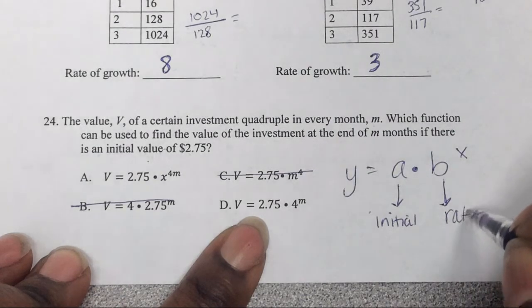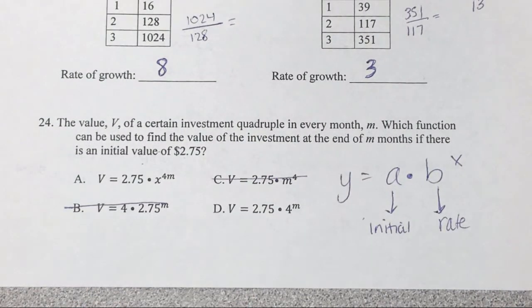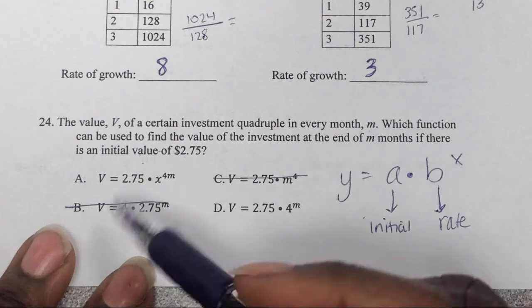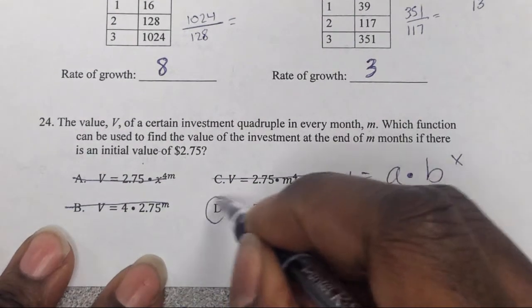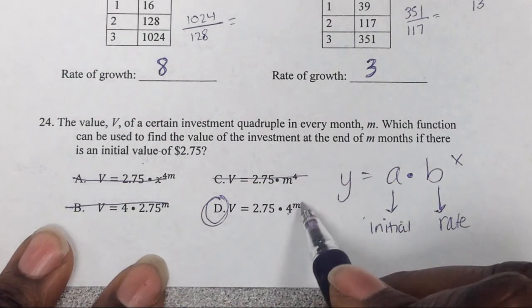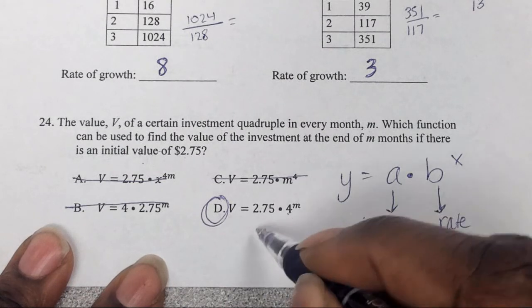So it can't be that one either. Yeah, this one's kind of weird. It tells you quadruple. Well quadruple is 4, so we know our rate should be 4. This doesn't mean... this is like funny looking. So answer is D. The rate is 4, has the power of M or X, and that's your initial value.